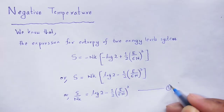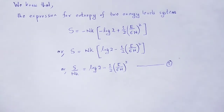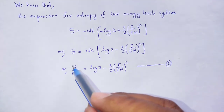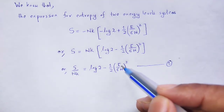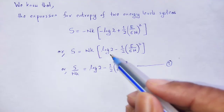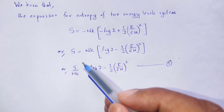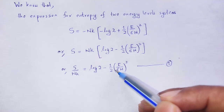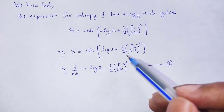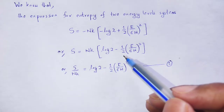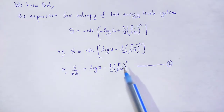Now, by taking that equation, we can plot a graph between S divided by n k and E divided by epsilon n. S divided by n k relates to the entropy, and E divided by epsilon n relates to the expression of energy. This gives us the graph between entropy and energy.